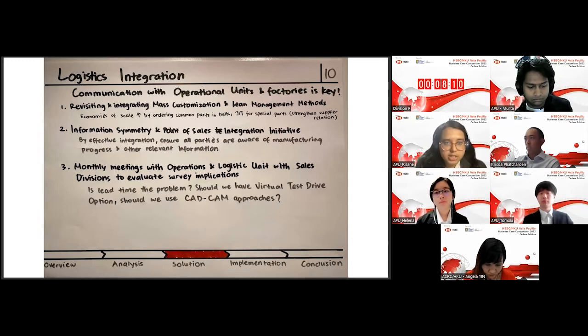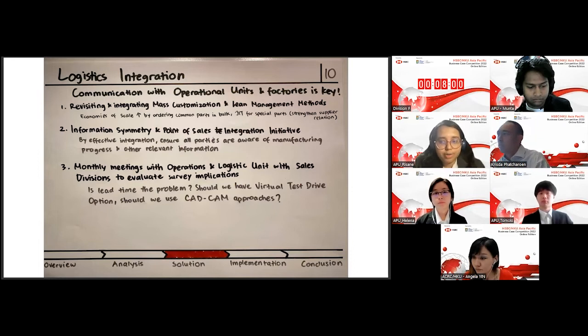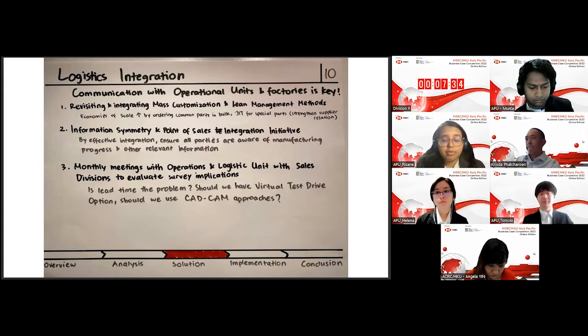For the second strategy, we have information symmetry and point-of-sales integration where, as we had seen before in the app, the customer and the sales representative would be aware of the progress of the manufacturer. This can only be done if there's information symmetry from the side of the operations. Lastly, we would like to encourage that there will be monthly meetings so that there's regular updates between the operational units and the sales division.